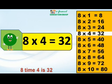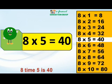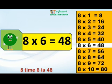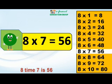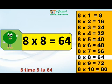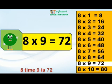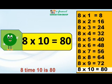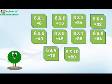8 times 5 is 40. 8 times 6 is 48. 8 times 7 is 56. 8 times 8 is 64. 8 times 9 is 72. 8 times 10 is 80. Friends, I repeat, Table of 8.